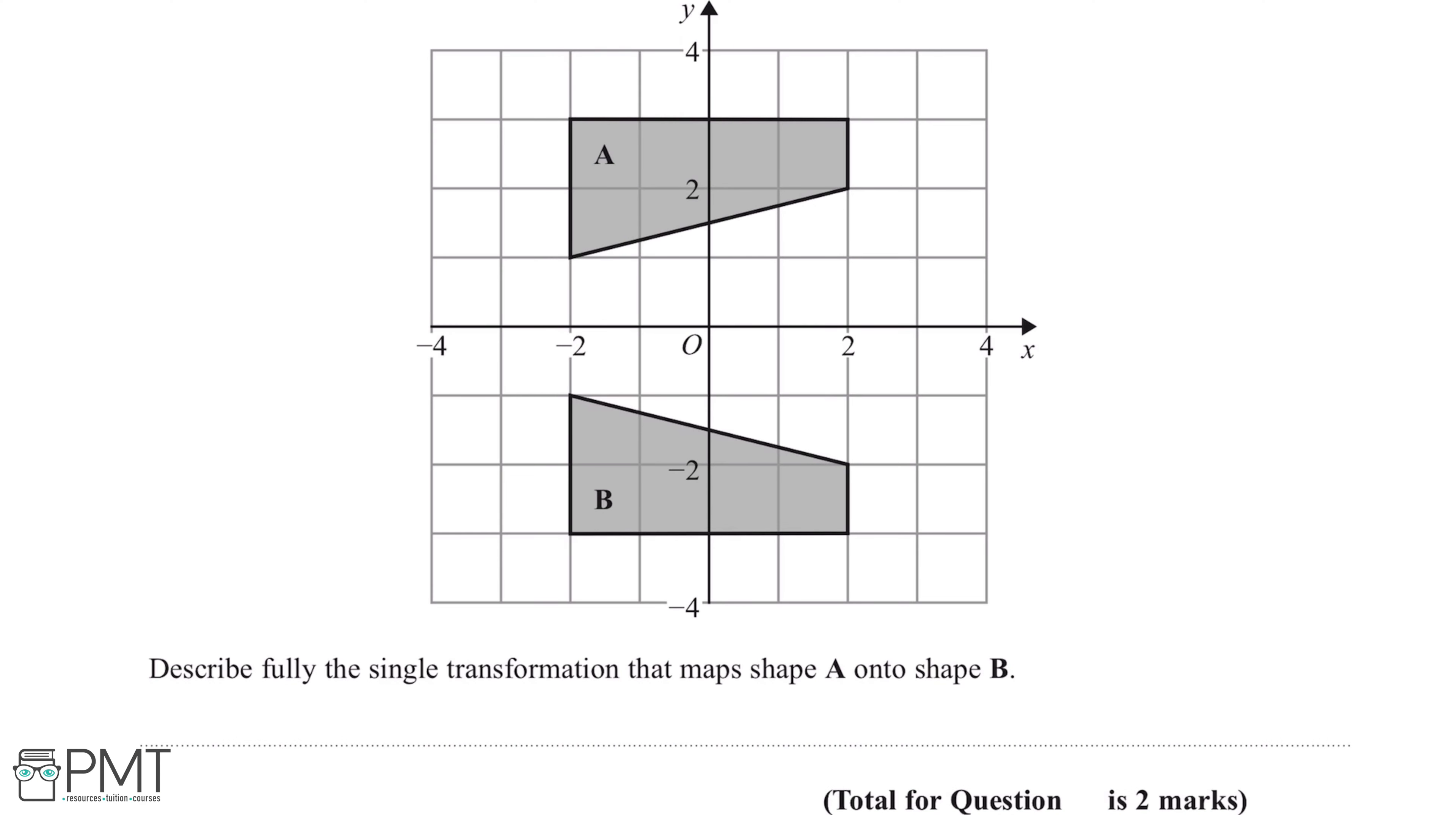Describe fully the single transformation that maps shape A onto shape B. So there's two marks available in this question.